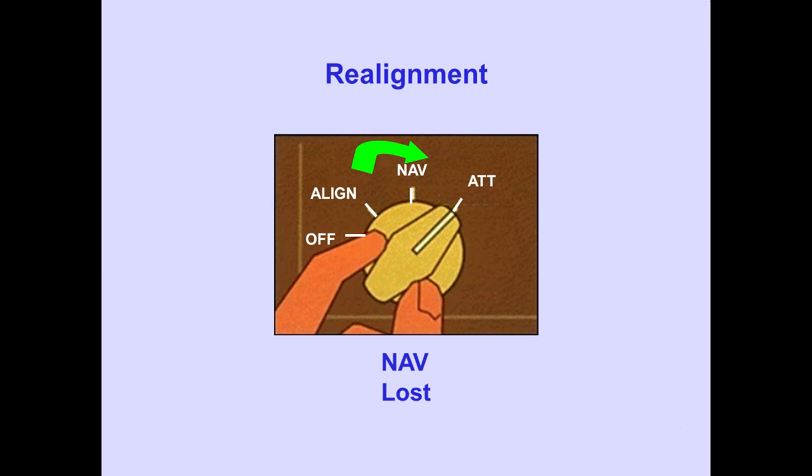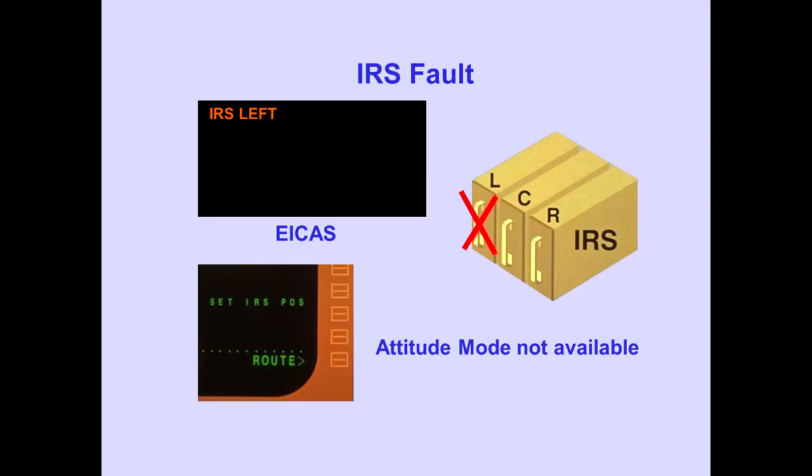Anytime the attitude mode is selected, the navigation capability is lost until the airplane is parked and the system is realigned. When the EICAS advisory message, IRS left, center, or right, is displayed, and the set IRS heading line is not displayed on the position initialization page, the attitude mode is not available. That IRS should be considered unreliable.